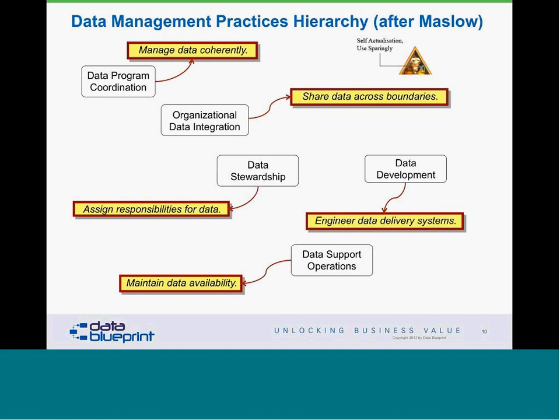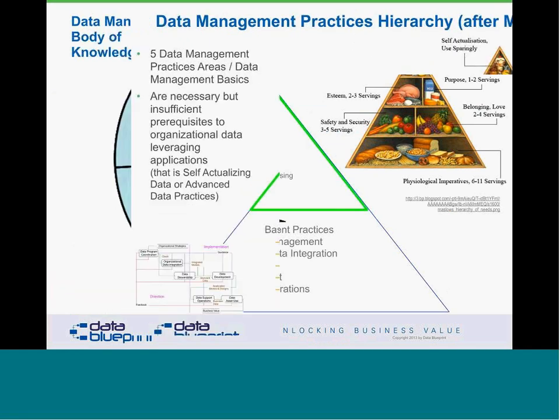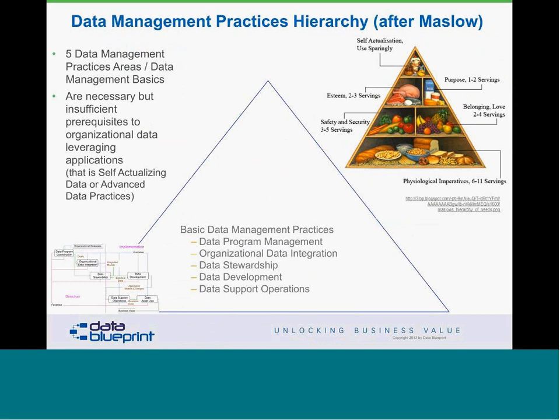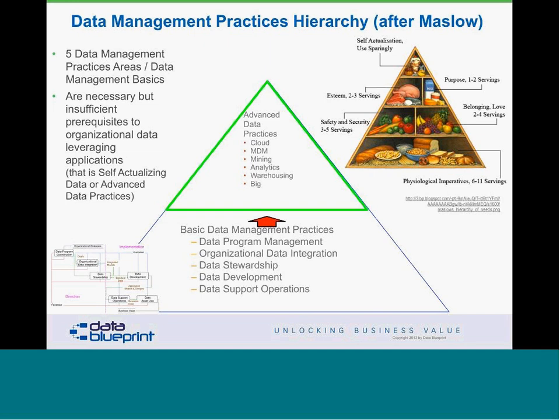Most people think that data management is what goes in what I call the green triangle on the screen — the tip of the iceberg. We call these the silver bullet technologies, things like cloud and master data management. Unfortunately, these things are really just the tip of the iceberg. This is analogous to Maslow's hierarchy of needs: if your food, clothing, and shelter needs are unmet, it is very unlikely that you will self-actualize. Data management is exactly the same way — without the basic practices, there is absolutely no way you can succeed at the top.